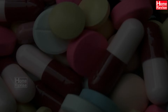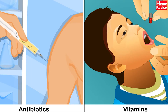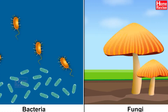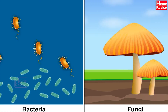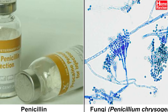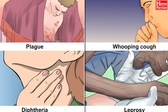Medicinal use: Certain antibiotics and vitamins are manufactured with the help of bacteria and fungi. The antibiotic penicillin is obtained from the fungus Penicillium. It is used to cure several bacterial diseases.